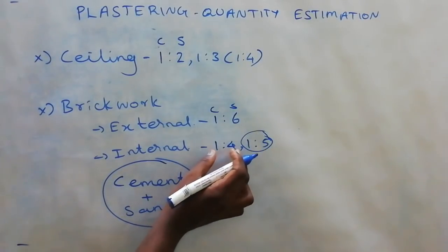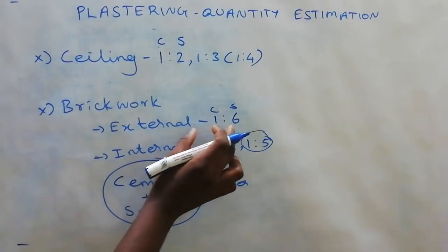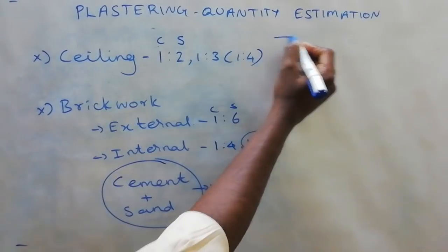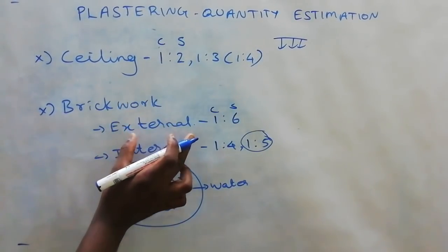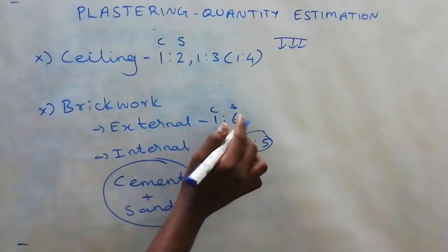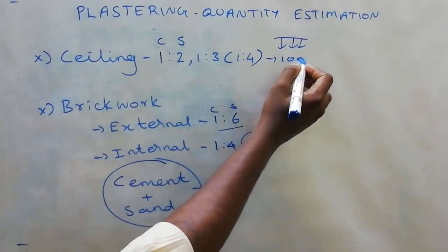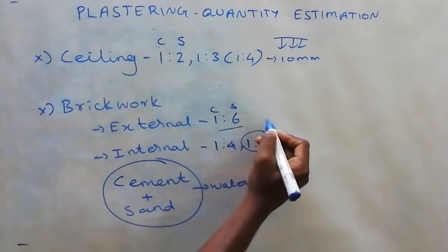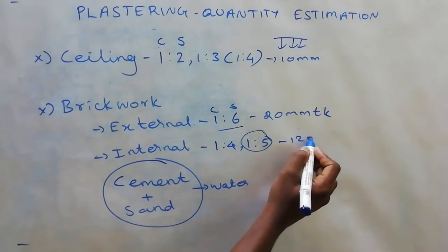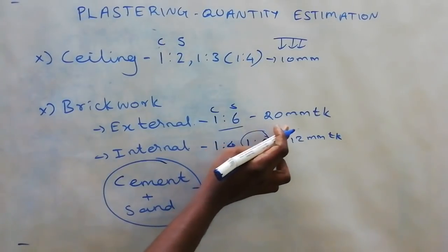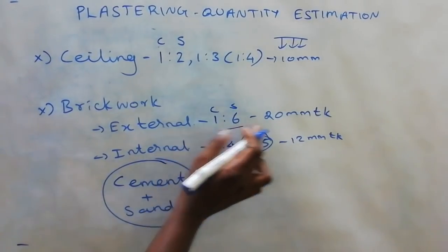We also use 1 is to 5. As you can see, the ceiling is also concrete. The ceiling thickness is 10 mm. We have double coating on the brick, which gives 20 mm thickness. We also have 12 mm thickness. The atmosphere is open, and the effect is a double coating of 20 mm.